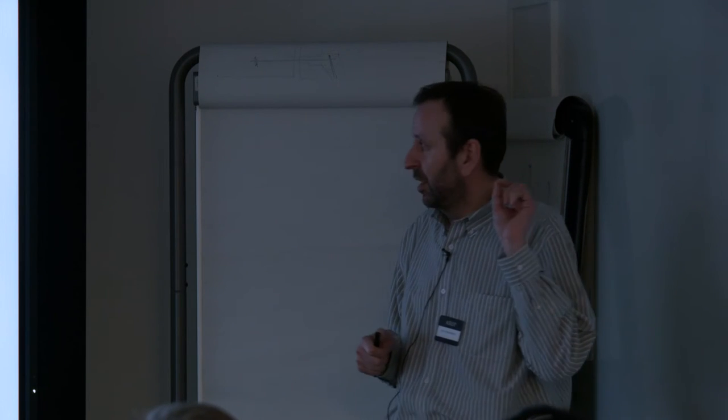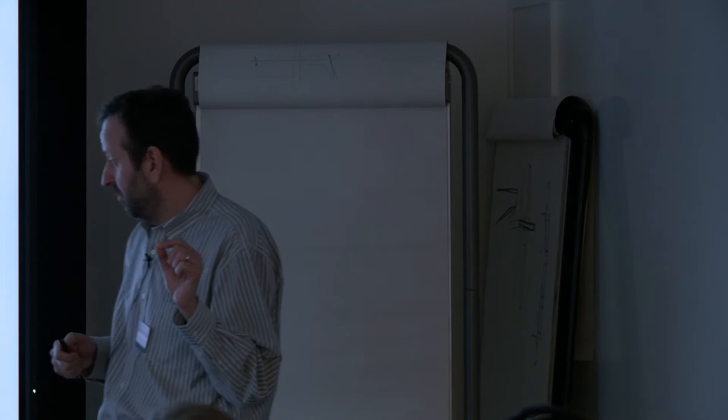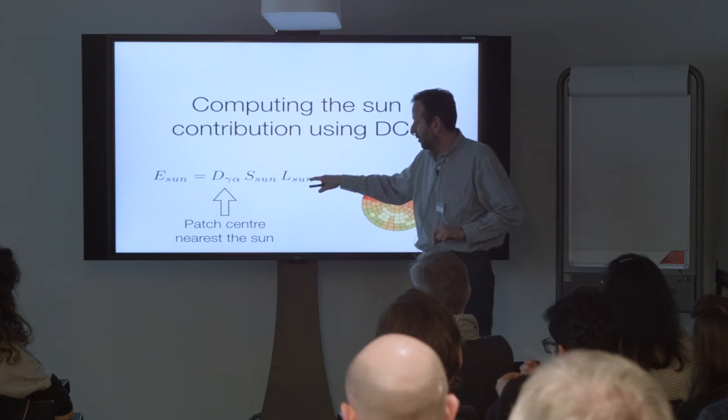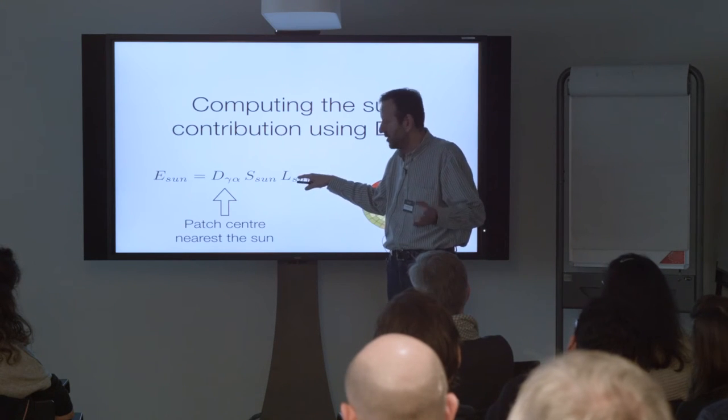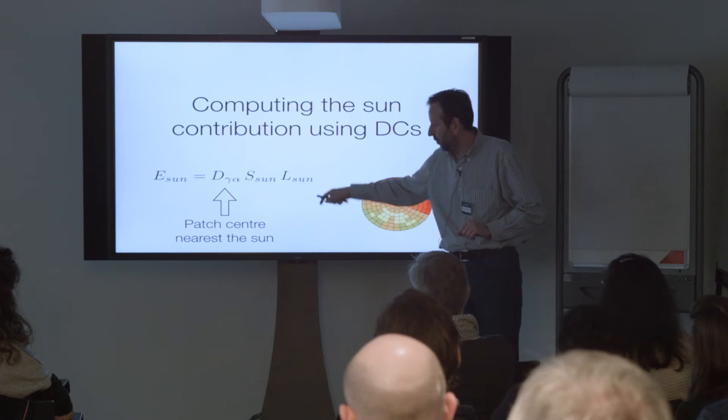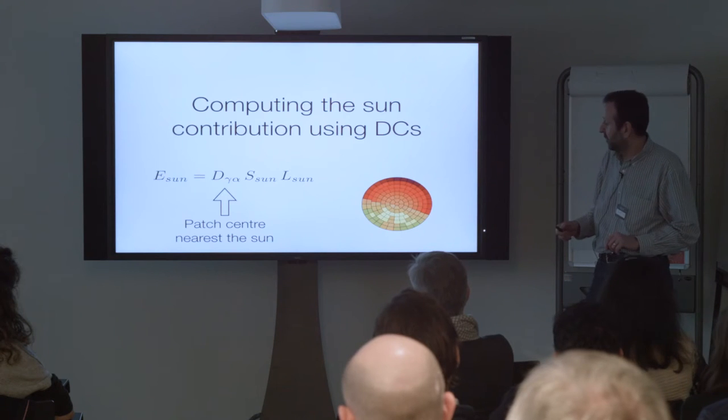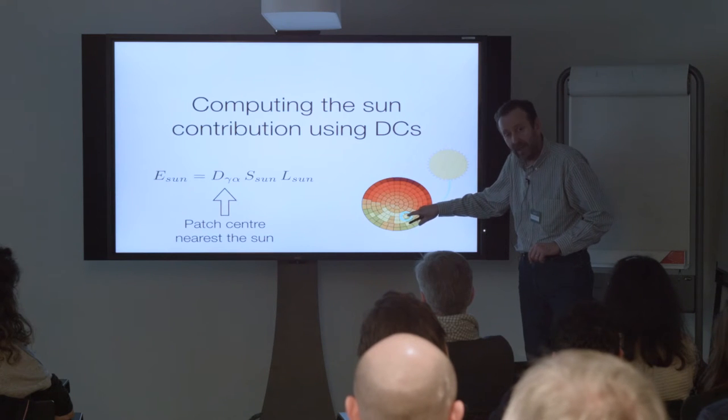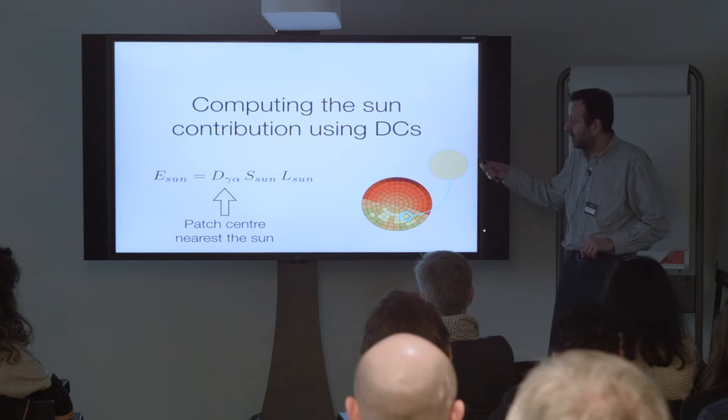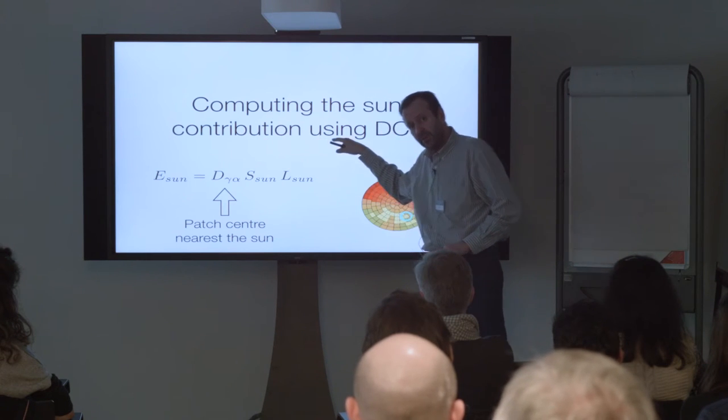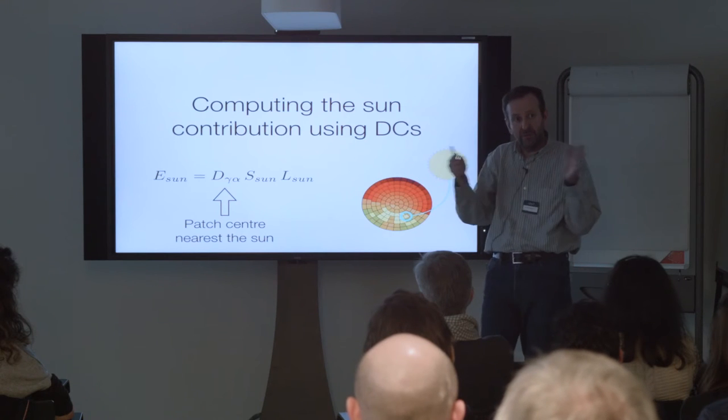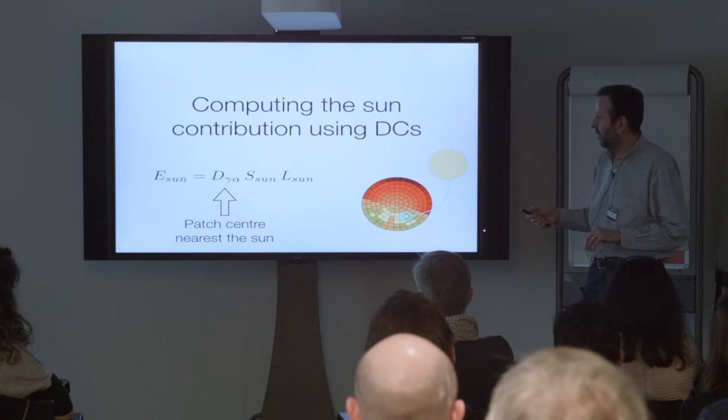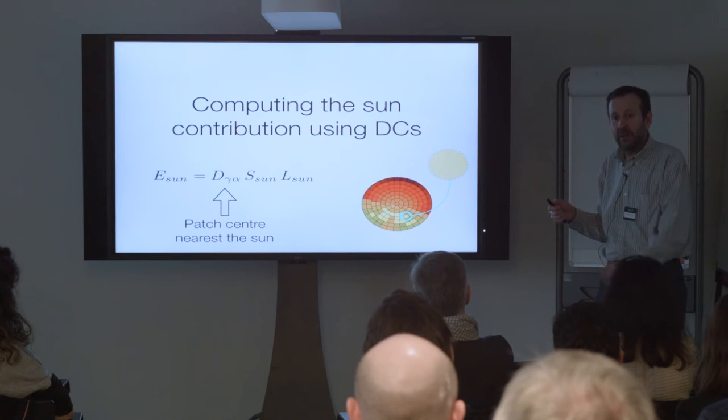To compute the sun contribution we'd use that same daylight coefficient but now we'd use the solid angle for the sun and the luminance of the sun which could be 10 to the 9 in very clear sun. We use the patch center which is nearest to the sun. So we've got our sun position happens to be somewhere there so we'll use that patch and we'll add that illuminance vector of the six values for the six photocells to the illuminance for the sky and then we've got our illuminance at that instant in time from the sun and the sky. And we can do this again and again for every sky in our climate data file.